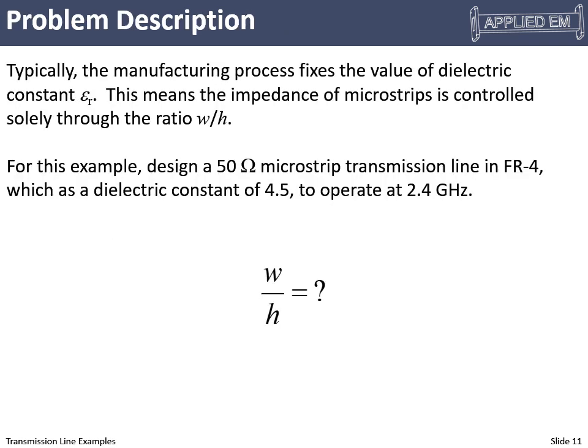So here's the problem that we want to solve. Typically in manufacturing, you'll choose your material. You want to make your printed circuit boards out of FR-4 or something like that. So most often, the dielectric constant is fixed and we don't really have a choice there. So to control the impedance of the line, what we have to control is this W over H ratio. So let's design a 50-ohm microstrip line in FR-4. That's a standard printed circuit board material. It has a dielectric constant of around 4.5 at 2.4 gigahertz. So given that, what is this ratio W over H such that we would get a 50-ohm microstrip line?